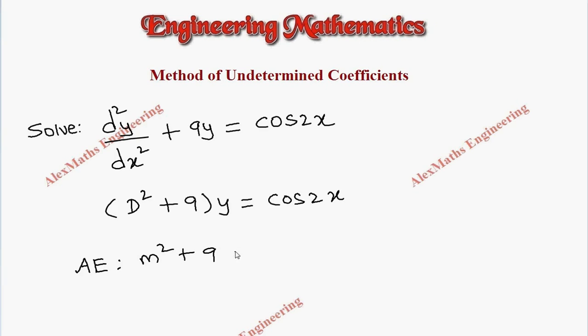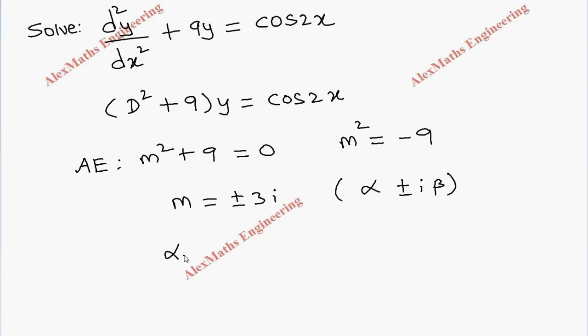From this, m² equals minus 9, and the value of m is plus or minus 3i. This is of the form alpha plus or minus i beta. So by comparison we get alpha is 0, beta is 3.